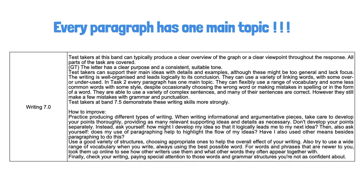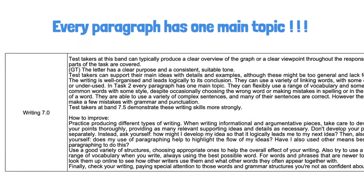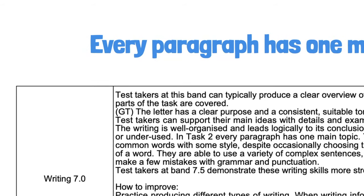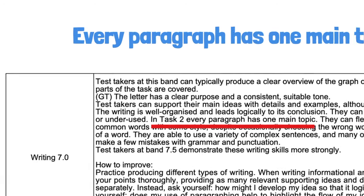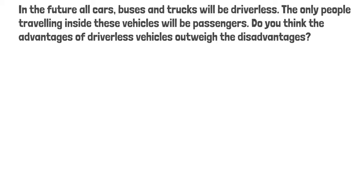Having only one main idea in every paragraph is very, very important. As you can see in my score explainer, one of the reasons why I got a 7 in the writing test is that in test 2, every paragraph has one main topic. Now let's go back to this question. I will show you how I would structure my essay. In the future, all cars, buses, and trucks will be driverless. The only people traveling inside these vehicles will be passengers. Do you think the advantages of driverless vehicles outweigh the disadvantages?